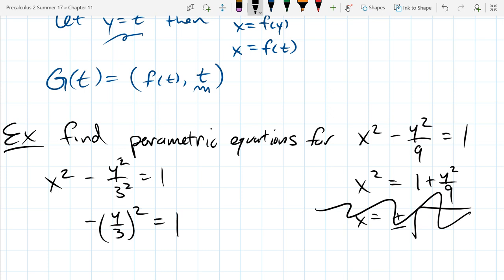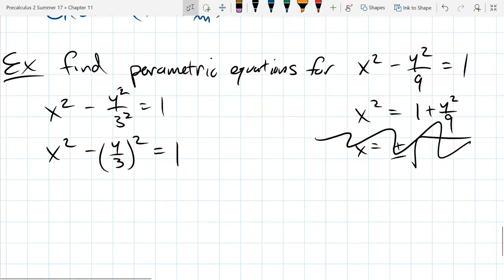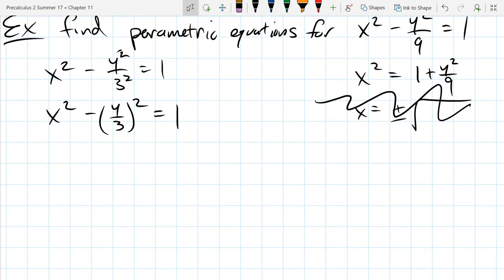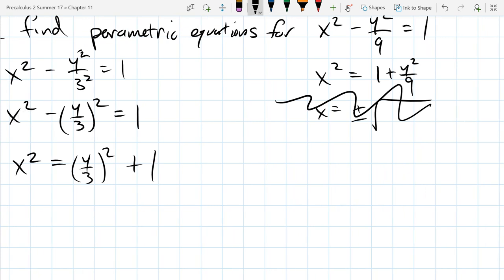And I'm going to factor out that power. Now, do I know a trig relationship that looks like thing squared minus another thing squared equals 1? Not off the top of my head. So what I'm going to do is just add that y over 3 squared to the other side. Alright, so now we want to think about what Pythagorean identity has trig function squared equals trig function squared plus 1. The first one that comes to my mind is the tangent and secant relationship.